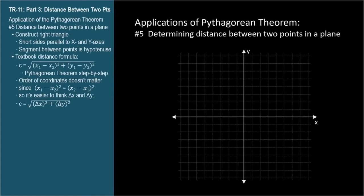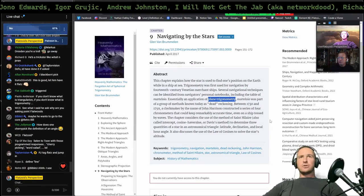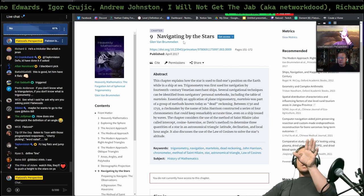We can also use the Pythagorean theorem to find the distance between any two points on a Cartesian coordinate plane. Let's pick two points: the first with coordinates x1, y1 and the second with coordinates x2, y2. When we draw horizontal and vertical lines through the points, the new lines are perpendicular, the triangle is a right triangle, and we can apply the Pythagorean theorem.